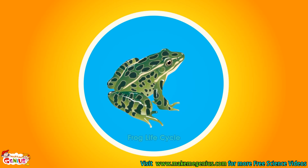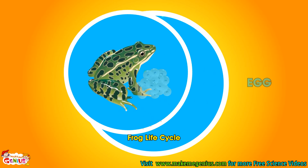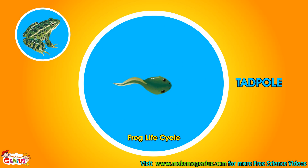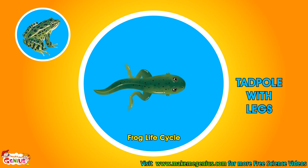Some animals, like frogs and insects, have a little more complicated life cycle. See this tadpole? It is the baby of a frog, but it does not look like a frog. It does not have legs — it has a tail and it swims like a fish in the water. When they start growing up...